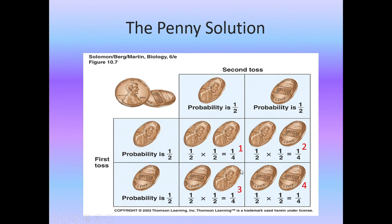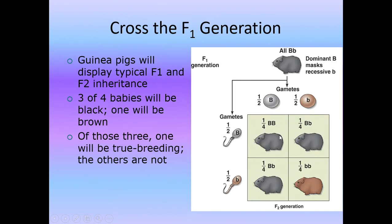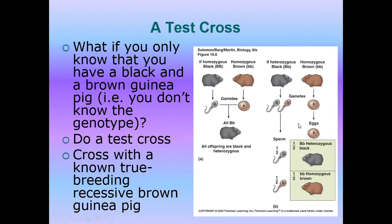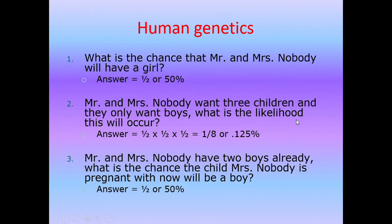Mendel arrived at his conclusions using concepts of probability. When tossing a coin, the chance of getting heads or tails is 50/50. Representing this in a table — 50% heads, 50% tails, half and half — when you multiply the probabilities you get 1/4. This is very similar to the ratios seen in a Punnett square, and you can apply these same probability assumptions to genetics problems.